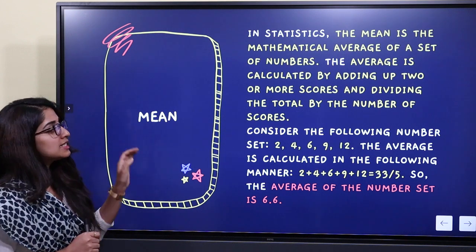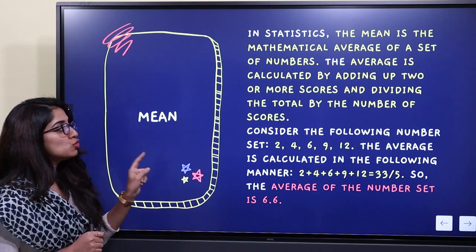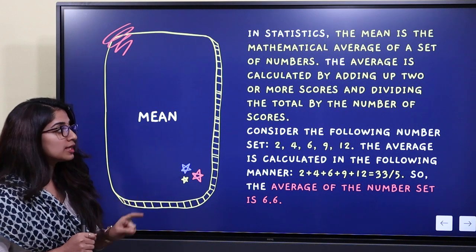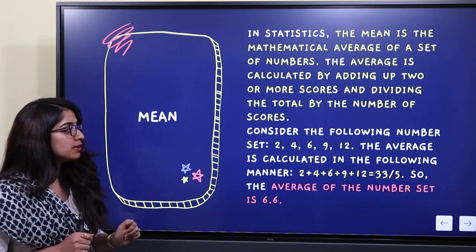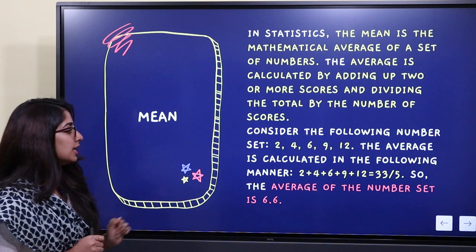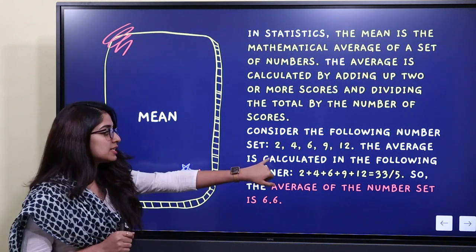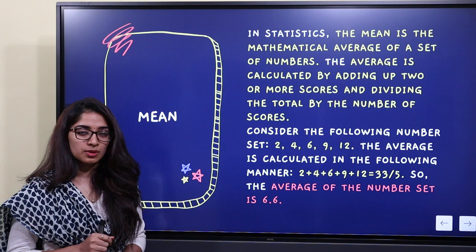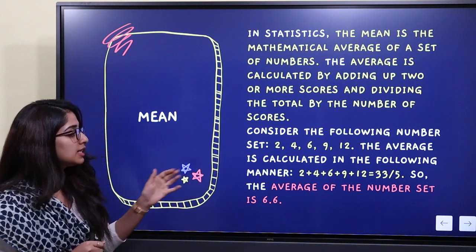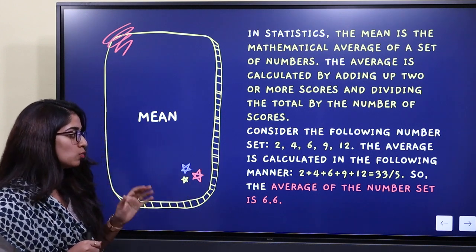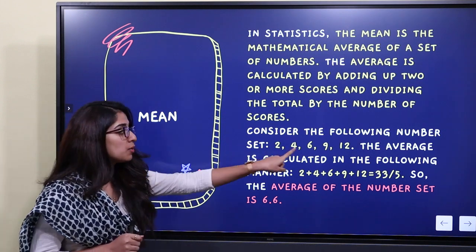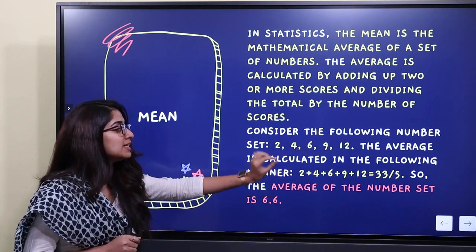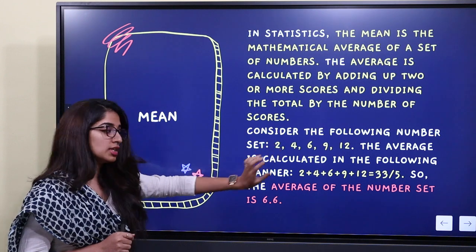How do we calculate the average? It is calculated by adding up two or more scores and dividing the total by the number of scores. For example, let's say we have this set: 2, 4, 6, 9, 12 — here are five digits. We add all of these, that is the sum of all numbers divided by the number in the distribution.